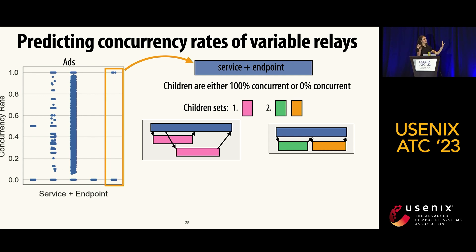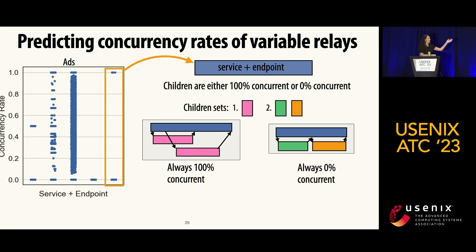If we split the invocations by the specific children sets they're calling, we might see the service is always 100% concurrent when calling pink and always 0% concurrent when calling green and orange. This makes sense — unique children likely have well-defined control or data dependencies between each other.